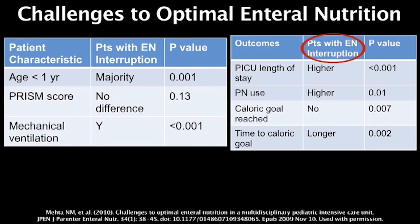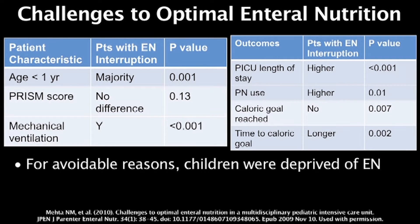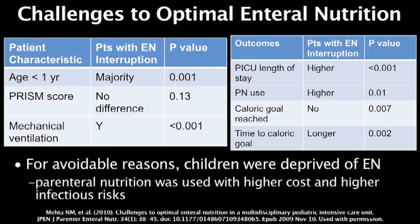Children with enteral nutrient interruptions were actually staying on the unit longer, were less likely to reach their nutrition goals, and had almost a four times higher reliance on parenteral nutrition. This means that for avoidable reasons, these children were deprived of enteral nutrition and, as a result, relied on parenteral nutrition with higher costs and potential for more infectious risks.